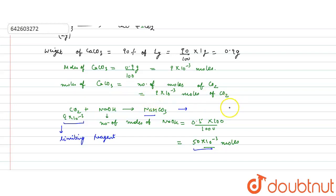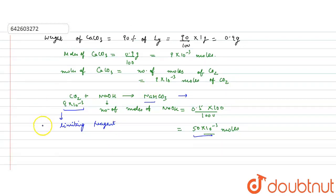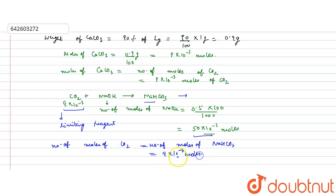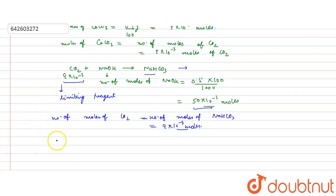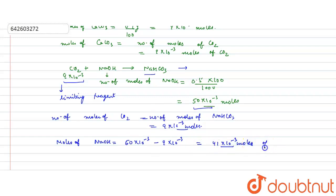Since CO₂ is the limiting reagent, the moles of NaHCO₃ formed equal the moles of CO₂, which is 9 × 10⁻³ moles. In the reaction, 9 × 10⁻³ moles of CO₂ and 9 × 10⁻³ moles of NaOH react together. The moles of NaOH left unreacted will be 50 × 10⁻³ − 9 × 10⁻³ = 41 × 10⁻³ moles.